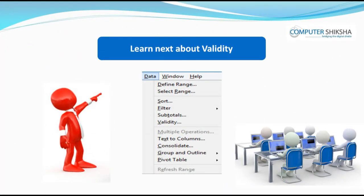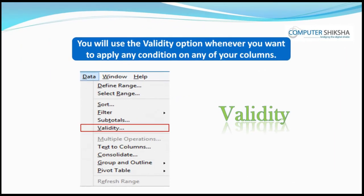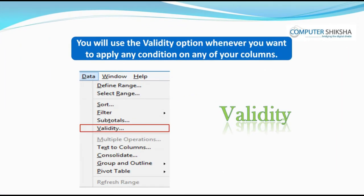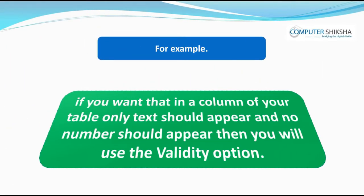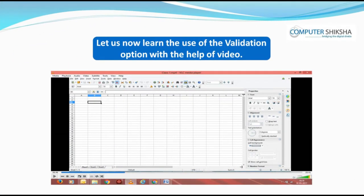Learn next about validation. You will use the validation option whenever you want to apply any condition on any of your columns. For example, if you want that in a column of your table only text should appear and no number should appear, then you will use the validation option.